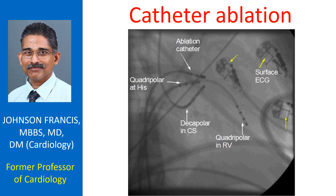Ablation is the process of damaging a disease-causing region to prevent its abnormal function. An example is ablation of a tiny region of heart muscle which generates abnormal signals causing very fast heartbeats. This process is known as catheter ablation.